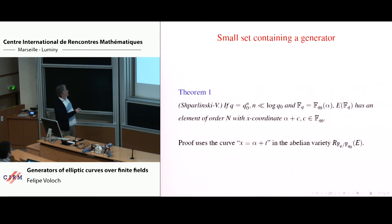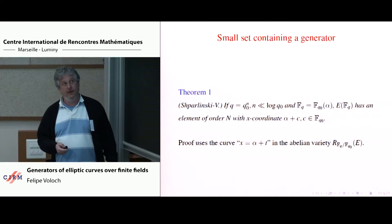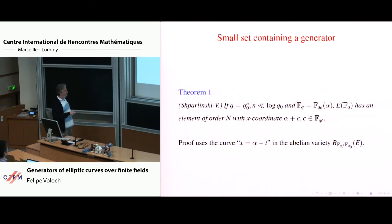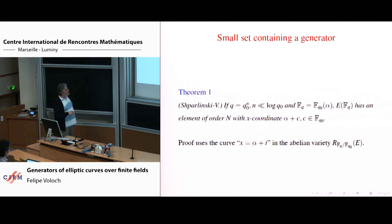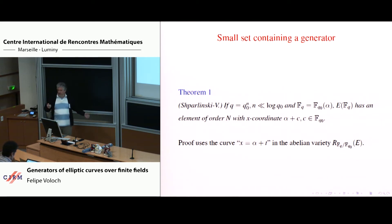Here's the theorem. If q, the cardinality of a finite field, is q₀ to the n where q₀ is also a prime power, and you write your finite field as F_{q₀} adjoined alpha, then for most alpha you can find an element of order N whose x-coordinate is of the form alpha plus an element of the subfield. So you're looking at a set of q₀ elements — instead of searching all q or q/2 x-coordinates, you find the generator within this restricted subset.